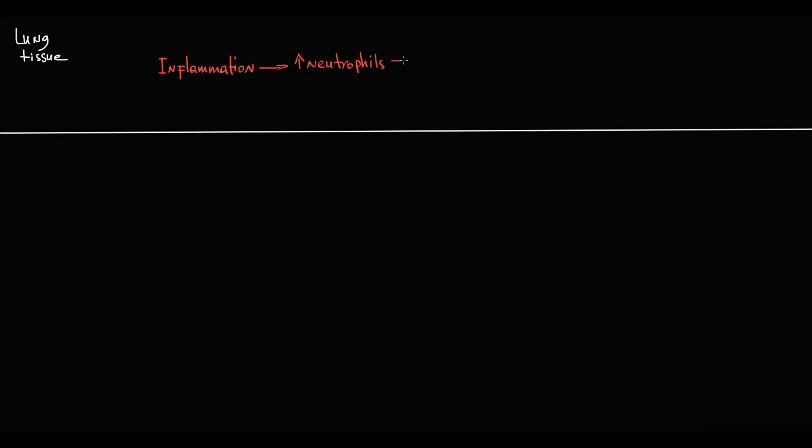With any inflammation in the lung tissue, the amount of neutrophils greatly increases. Activated neutrophils in the area of inflammation begin to secrete proteolytic enzymes like neutrophil elastase, which destroy elastin fibers and thereby cause severe damage to alveoli.